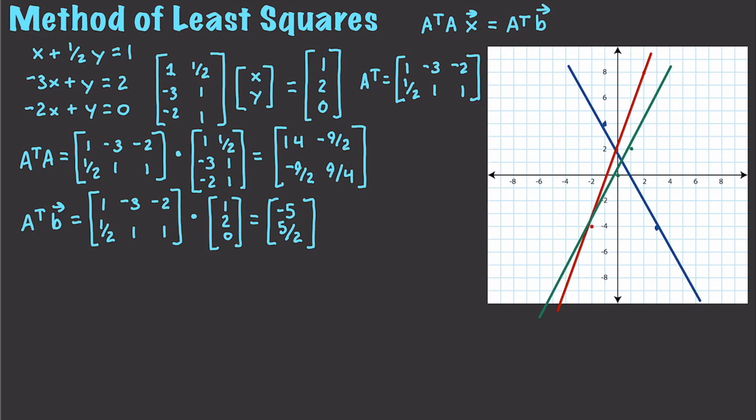And with this new information, we're going to be able to say A, 14, negative 9 over 2, negative 9 over 2, 9 over 4, x is going to be equal to negative 5, 5 over 2. And what we're going to be able to do now is augment these two. So let's just go and get rid of this and grab this guy right here, put this in right there and draw a line down the middle. And let's go and convert this. So what I want to do is I'm going to convert it into reduced row echelon form to find our approximation. So how do we do that?